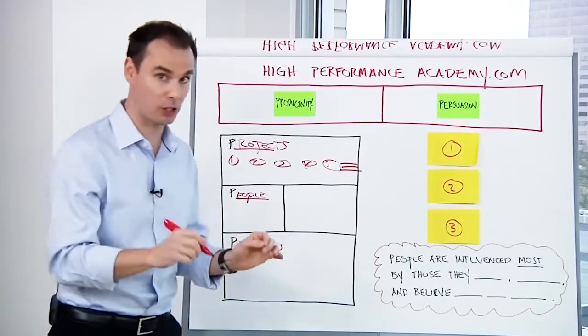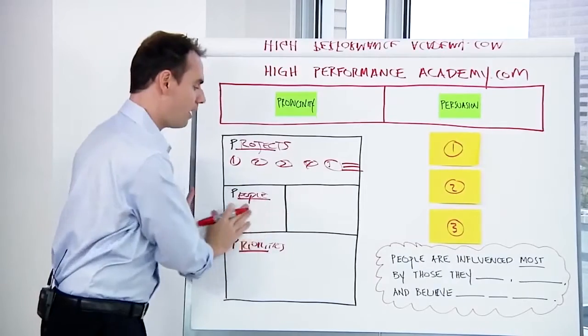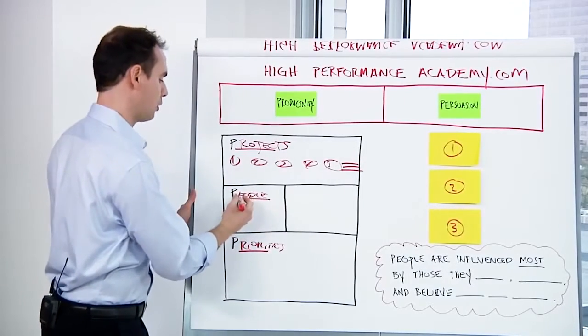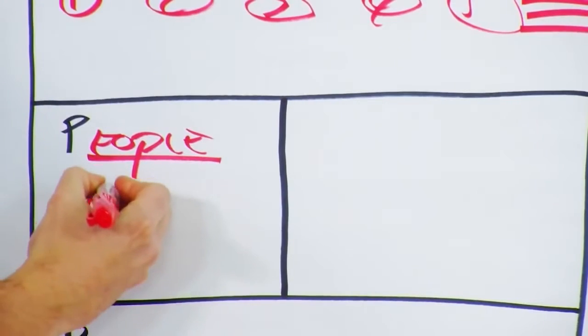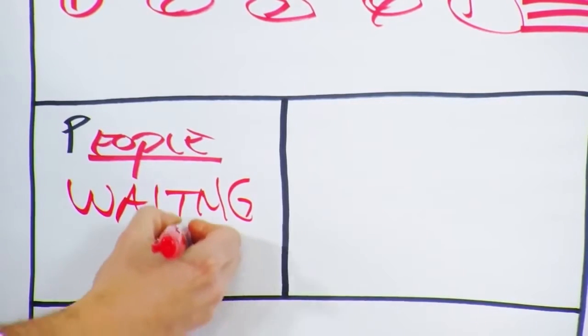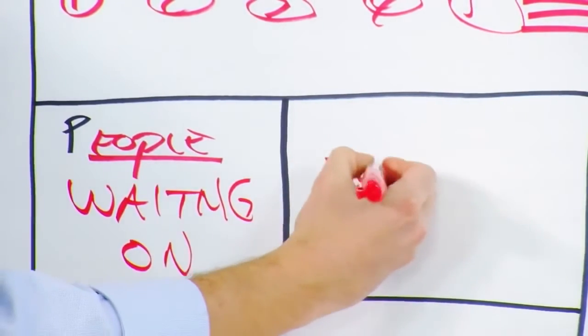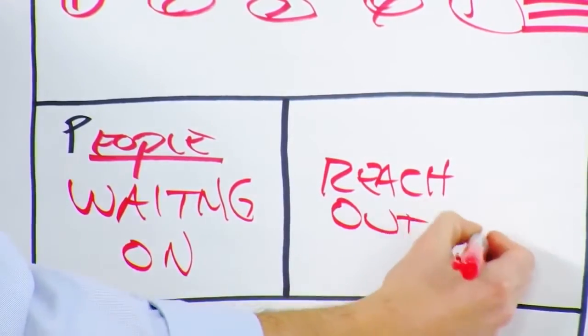The second thing I want you to focus on is the people in your life. And of two categories, I want you to brainstorm. Every single morning, I print this out and I work through this. Next, this people category, I want you to think through two things. I want you to think of categories of people as one, the waiting on category, and two, the reach out to category.